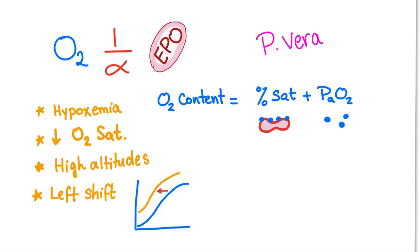Number two: Oxygen content equals the percent saturation of oxygen plus the PaO2, free oxygen in the blood. Hypoxemia is decreased free oxygen in the blood. Decreased O2 sat is decreased saturation, which is oxygen bound to hemoglobin on the RBCs. Hypoxemia and decreased O2 sat will decrease oxygen content and increase EPO.